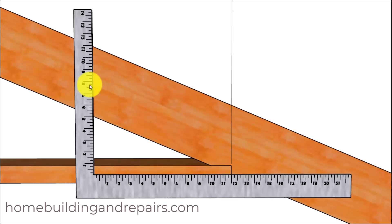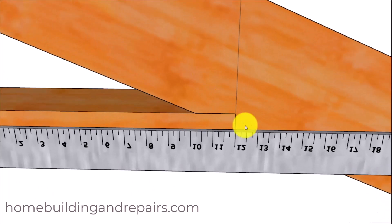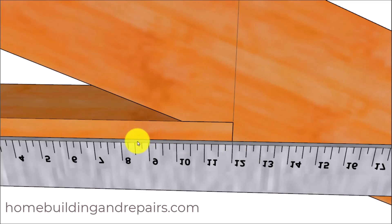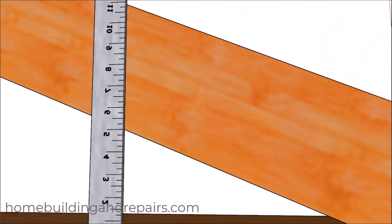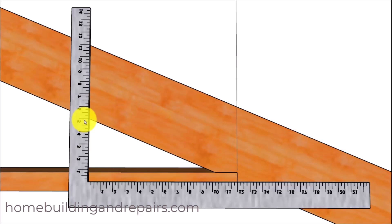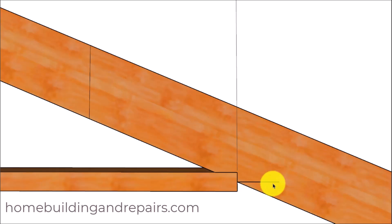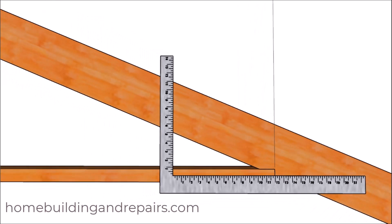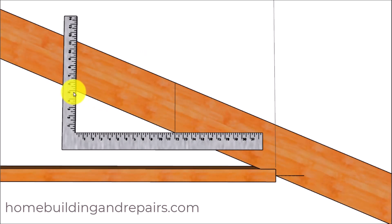For a 4-in-12 pitch you'd use the 4-inch line, for an 8-in-12 pitch you'd change the angle so the 8-inch line lines up with the bottom of the rafter. Line up the 12-inch mark on the framing square — either inside or outside — just don't mix inside on the bottom with outside on the top unless all your measurements are correct. Then line up the 5-in-12 mark on the side of the rafter and mark it.